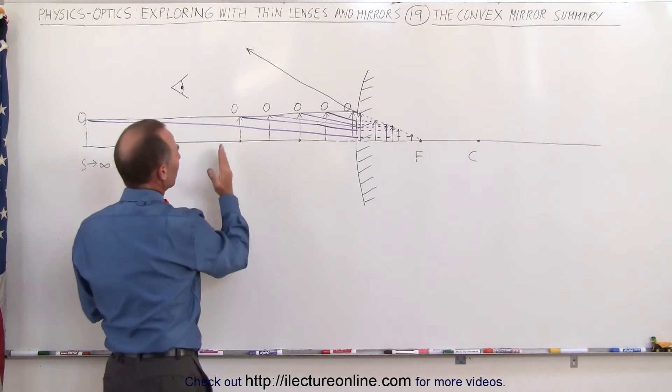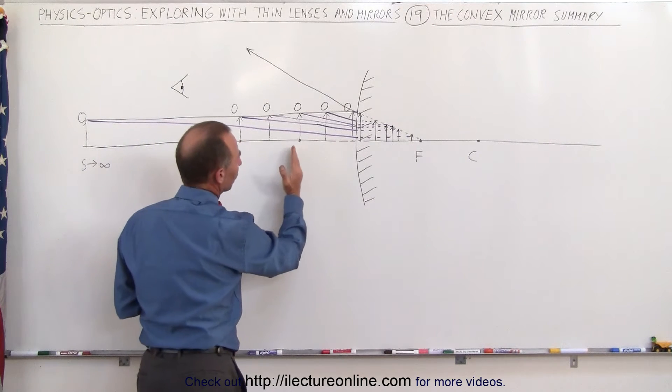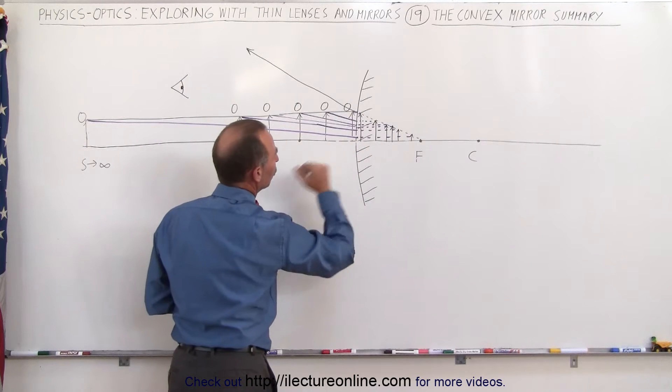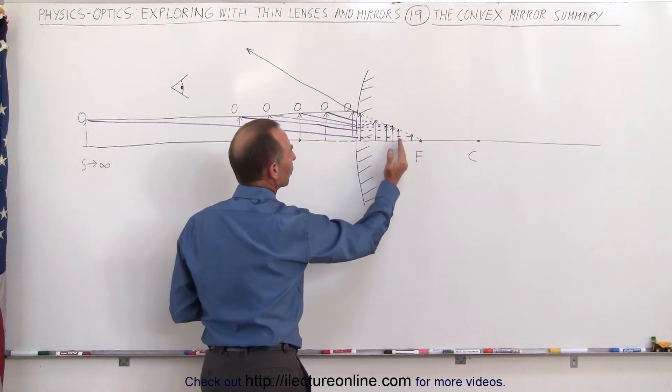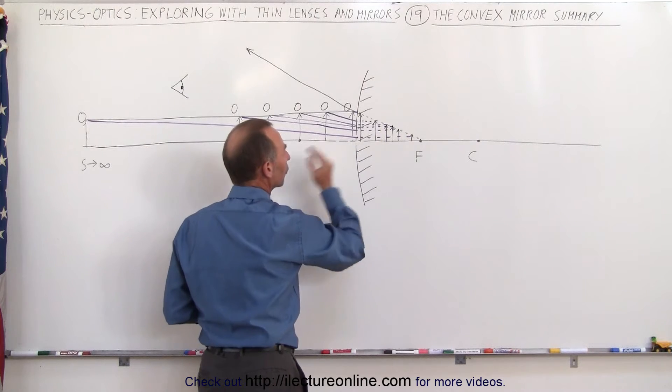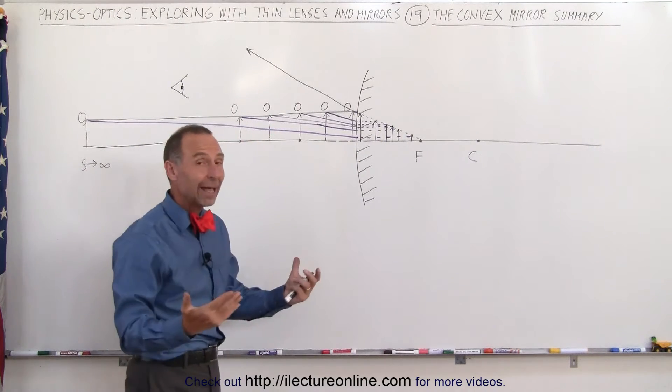Now what happens when we place the object closer and closer to the mirror? Then we can see that the image will form closer and closer to the mirror as well. Why is that?